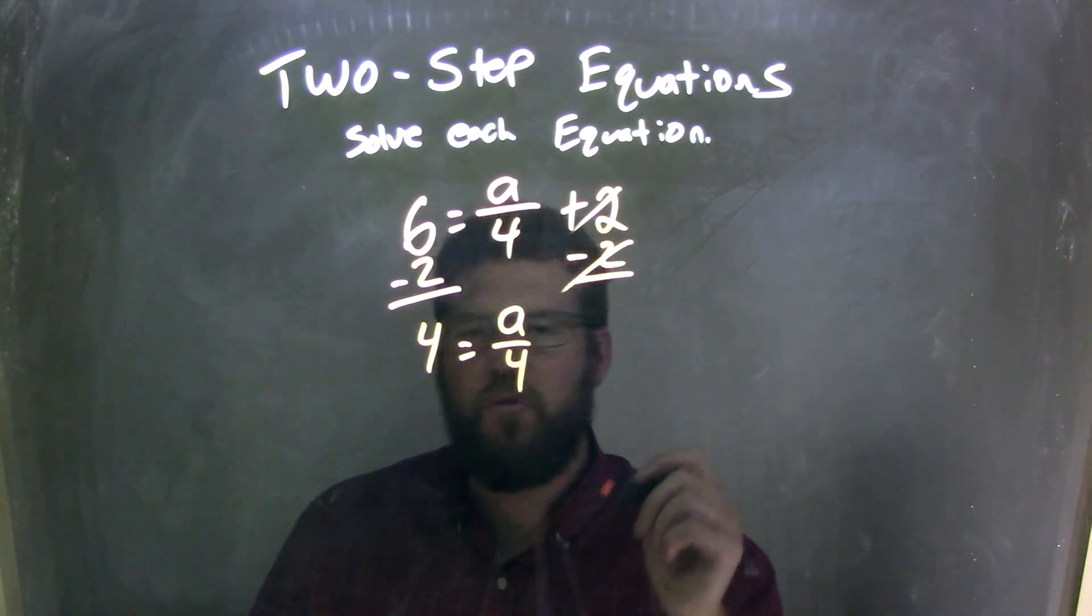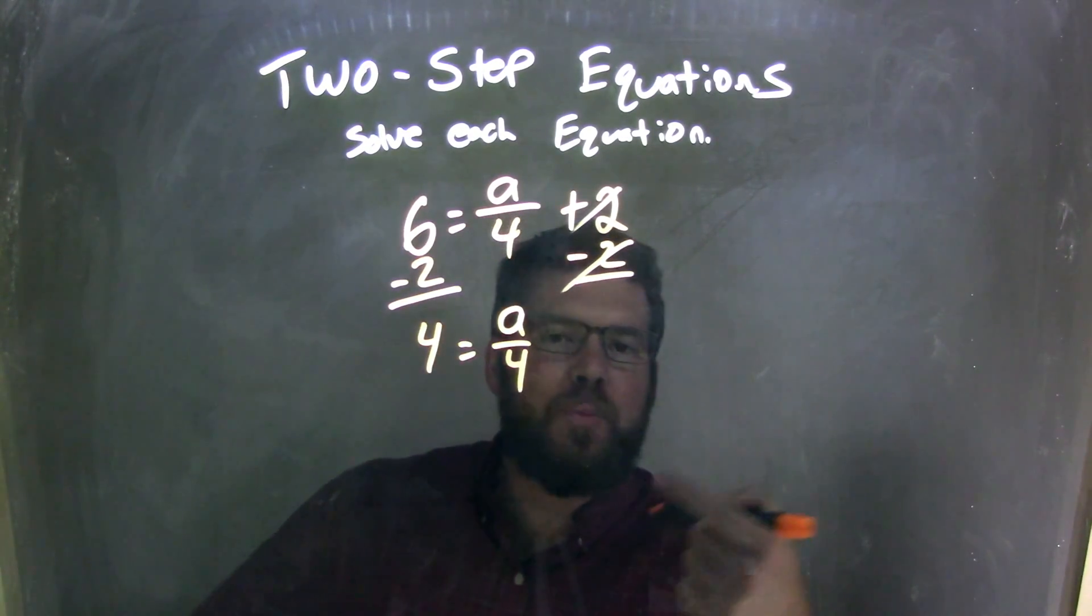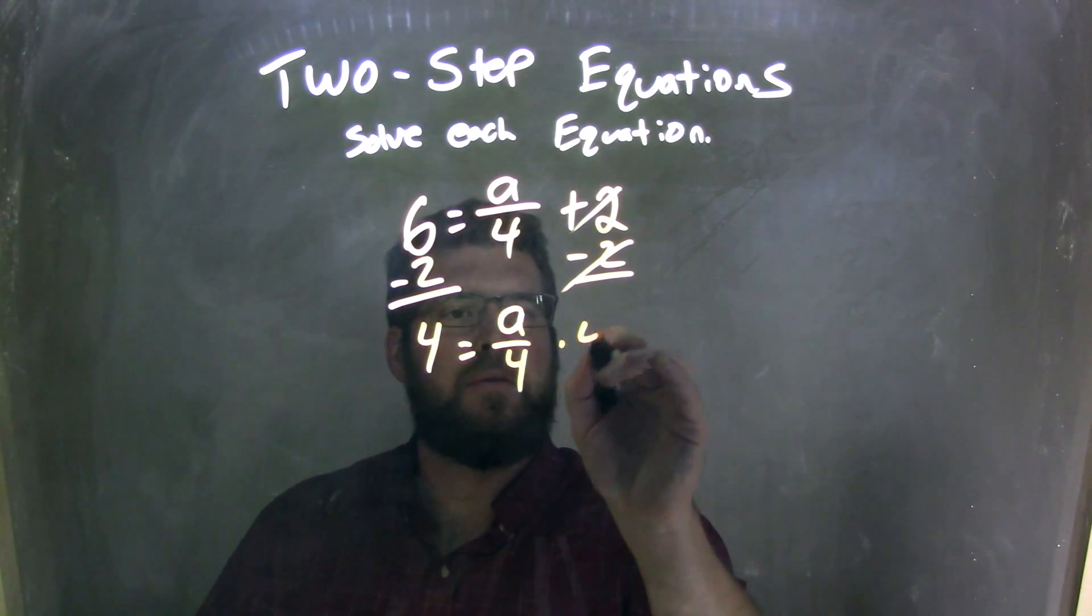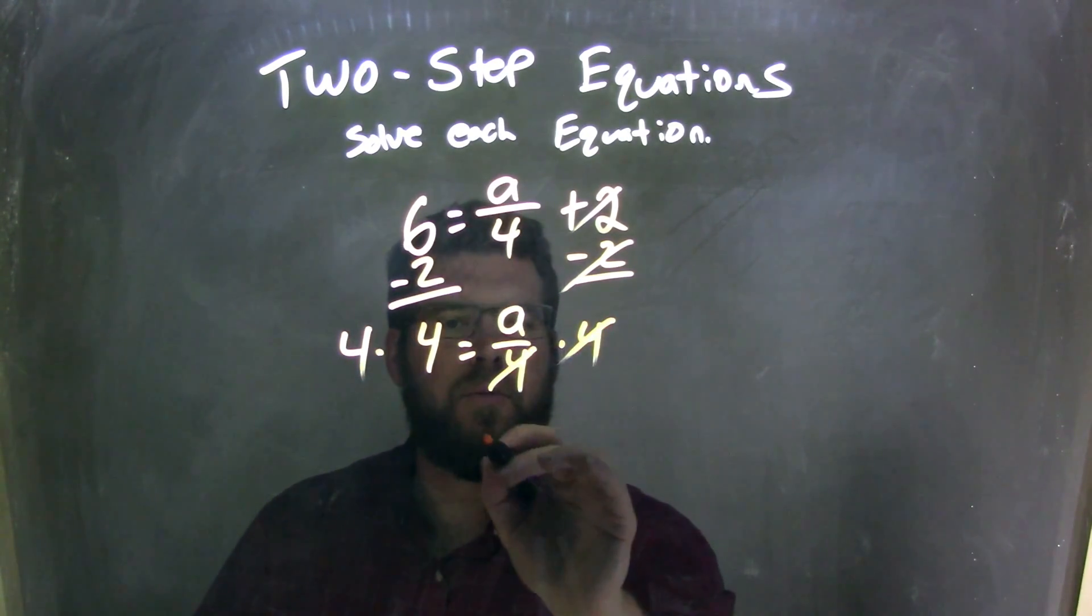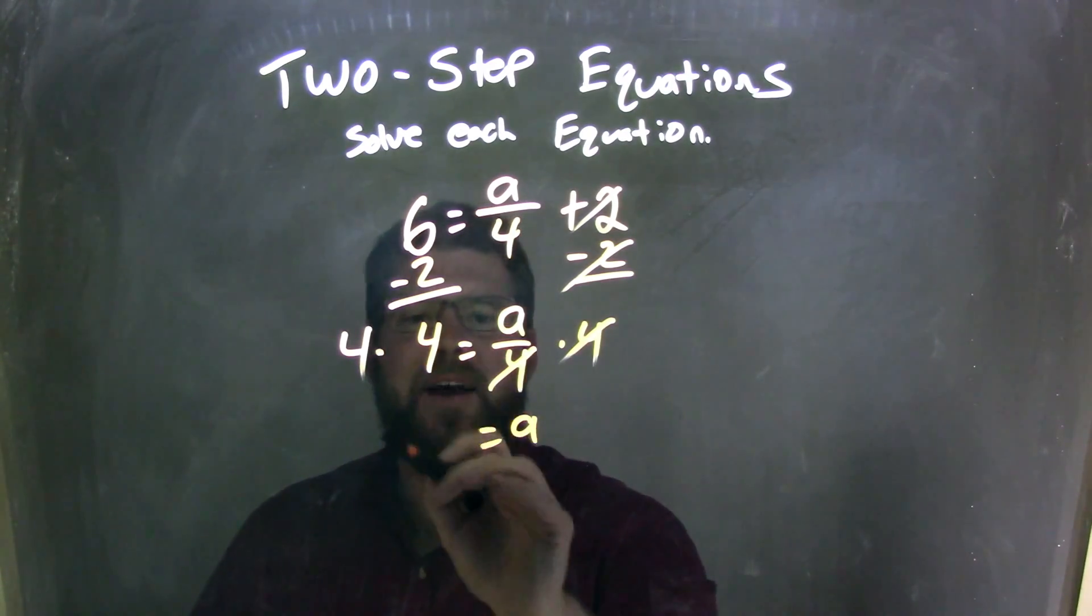Well, A divided by 4 is just division now, so I can multiply 4 to both sides to get A by itself. 4 is canceled, we're left with A here, and 4 times 4 is 16.